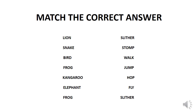Now students, let's see how much you have learnt. Match the correct answer. There are two columns on the screen — in the first column, animals are given, and in the second column, their movement is given. Match the animals with their correct movement. You have two to three minutes. It is better to maintain one notebook now — whatever work I give you, do it in that notebook so that you can revise the things later on.